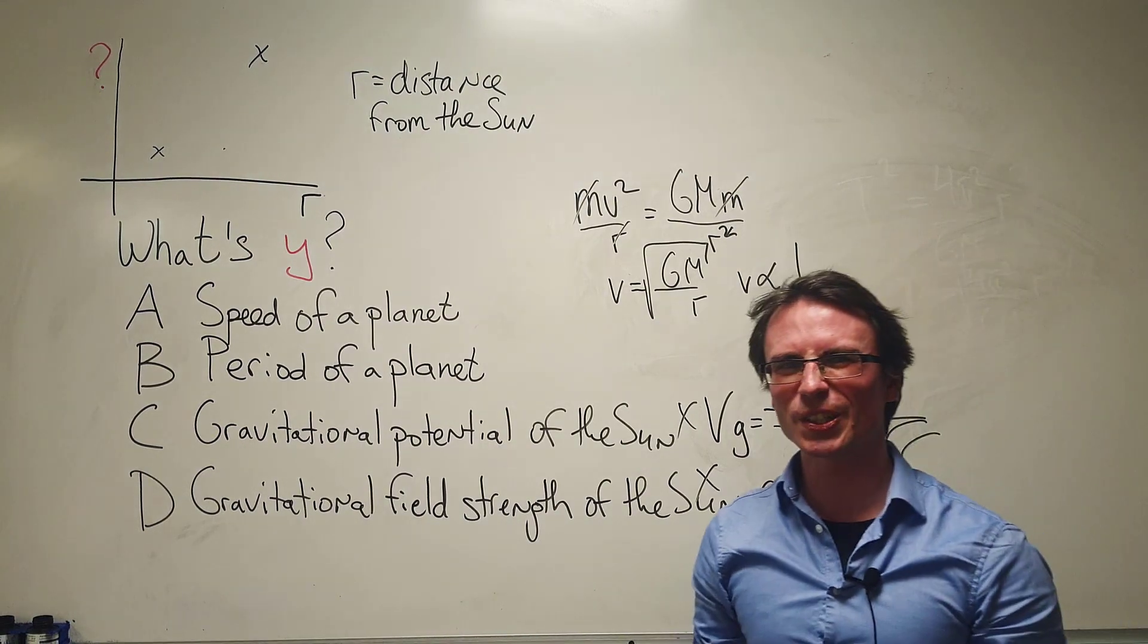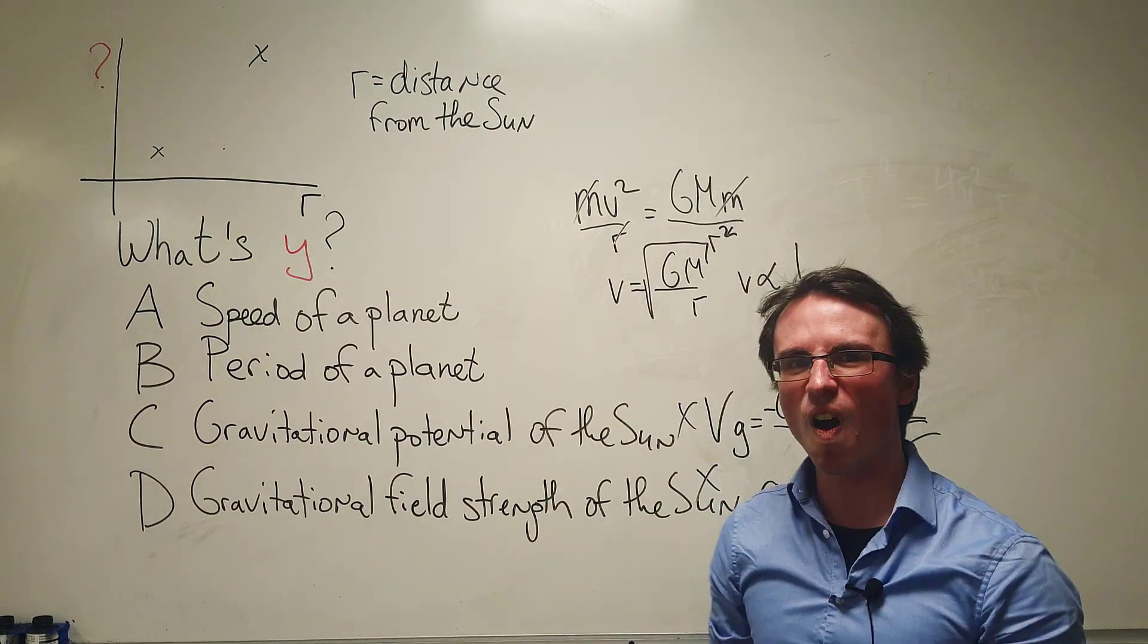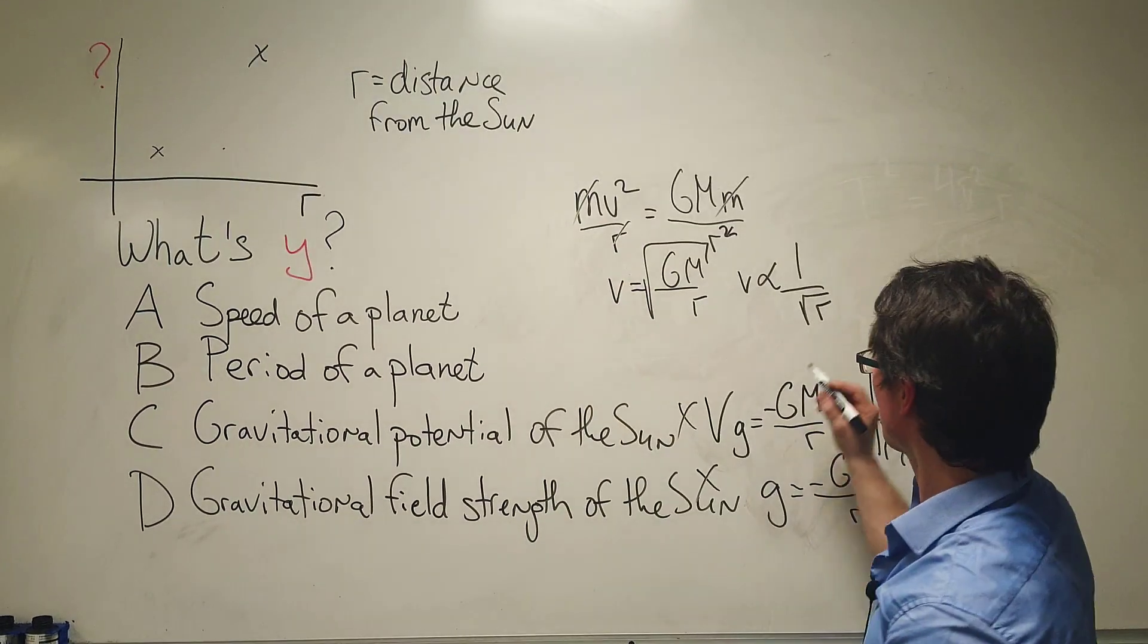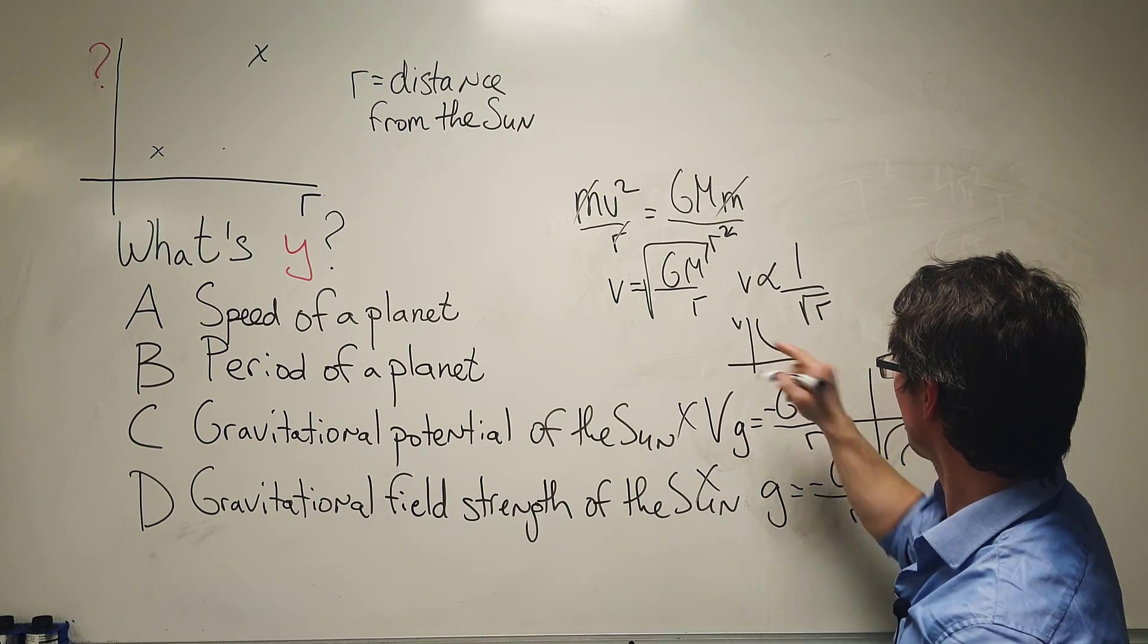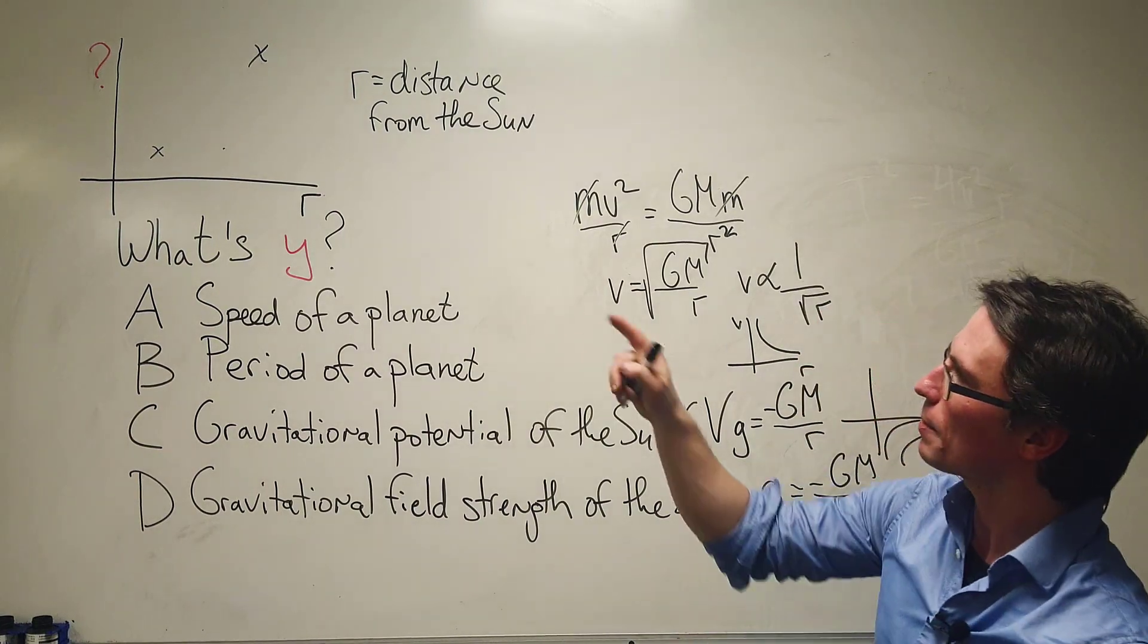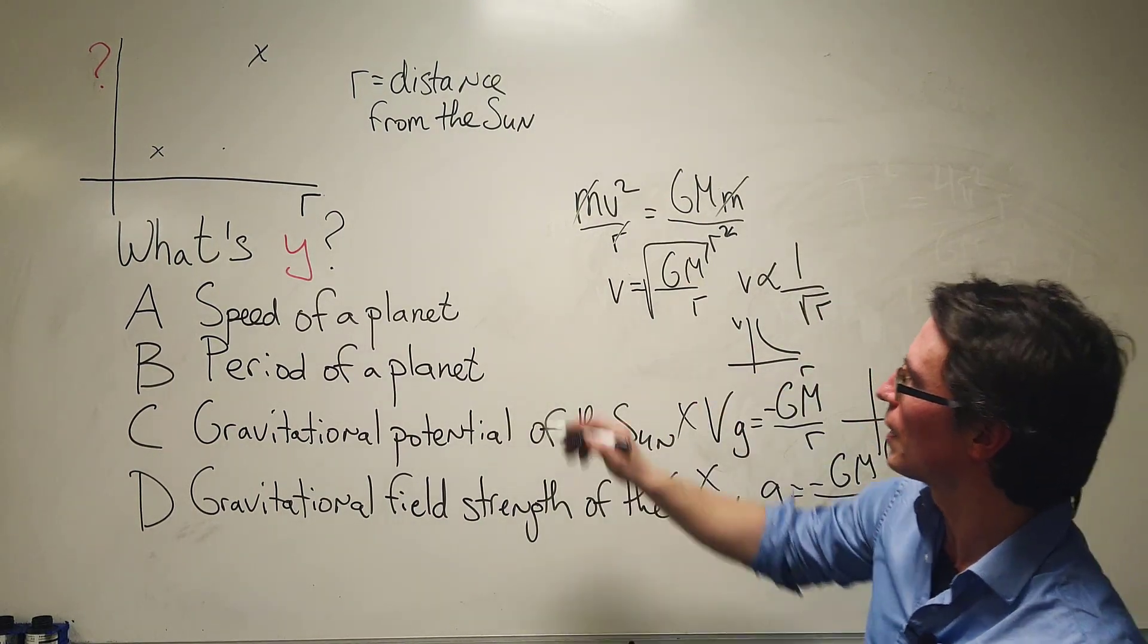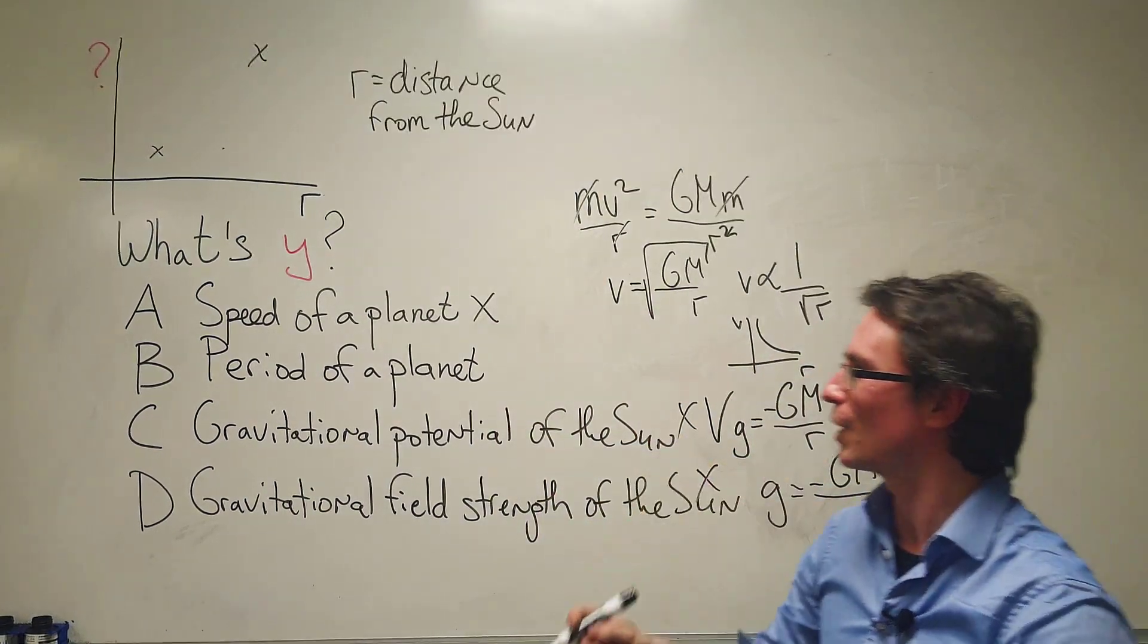So if I was to plot a graph of v against r it will not look like this, it will look something kind of closer to this. So we have a shape which is going to be increasing. Well we know that it's not going to be A, and by the process of elimination we know that the correct answer has got to be B.